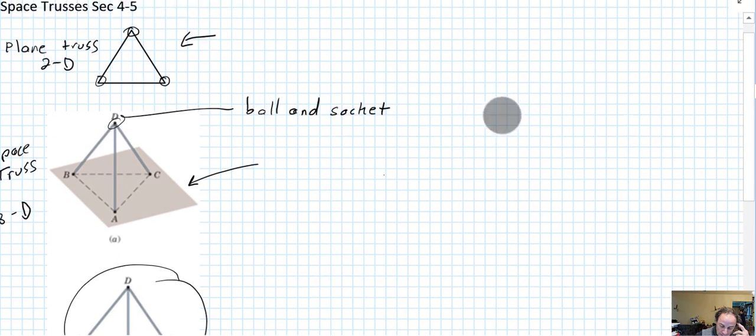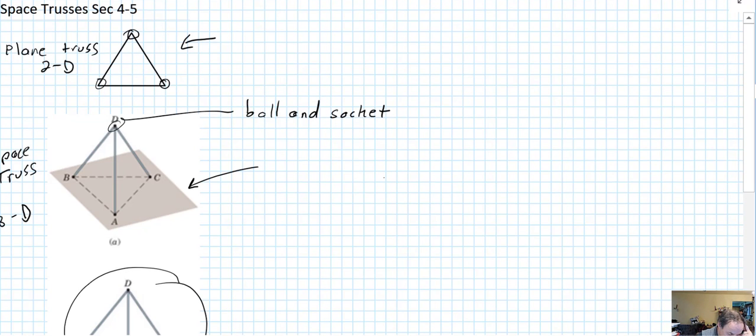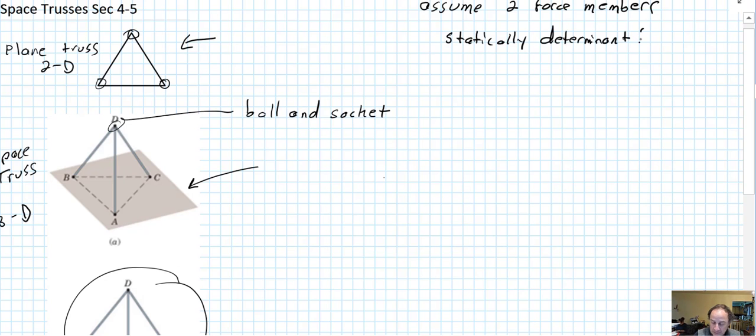As with plane trusses, a lot of the similar assumptions. We can assume two force members if the center lines of the joint members intersect at a point. And to determine if they're statically determined, same process, only now we're doing three dimensions. So we're still going to have j defined as the number of joints.